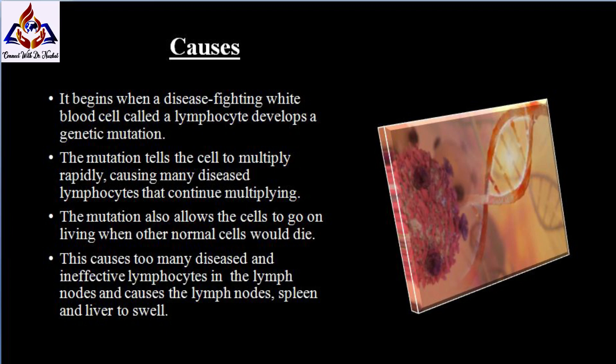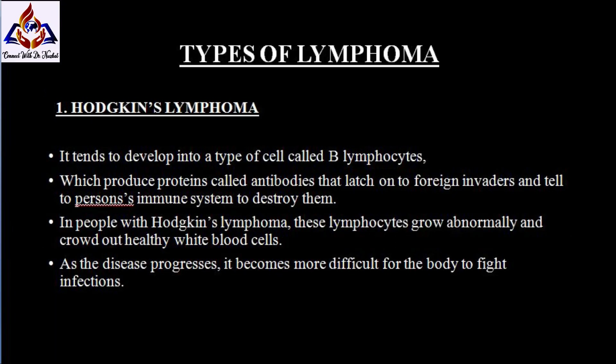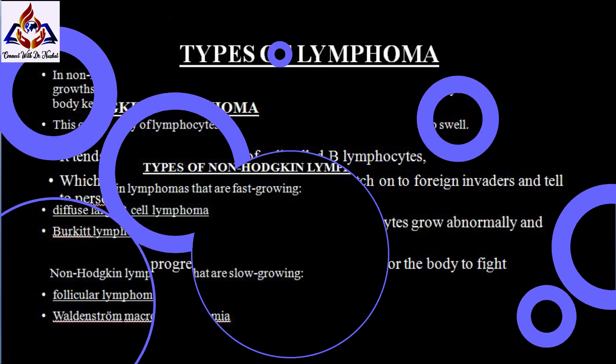This causes the lymph nodes, spleen, and liver to swell. There are two types of lymphomas: Hodgkin's and non-Hodgkin's lymphoma. In Hodgkin's lymphoma, it tends to develop in a type of cell called B lymphocytes, which produce proteins called antibodies that latch on to foreign invaders and tell your immune system to destroy them. In people with Hodgkin's lymphoma, these lymphocytes grow abnormally and crowd out healthy white blood cells. As the disease progresses, it becomes more difficult for your body to fight infections.